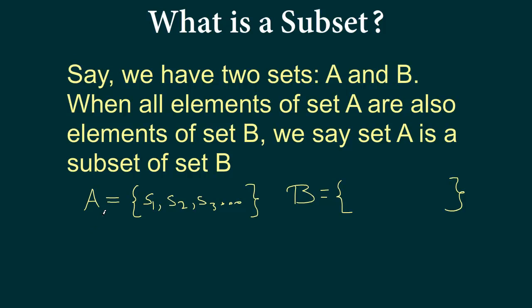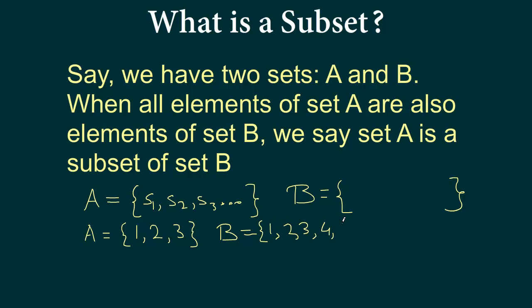Or let's take a more numerical example. Say we have set A that has the numbers 1, 2, and 3, and set B that has the numbers 1, 2, 3, 4, and 5. We see that the elements 1, 2, and 3, which are in set A, all appear in set B. Set B contains more elements, but it does contain all of the elements that appear in set A. So in this case we say set A is a subset of B.